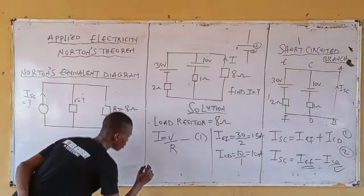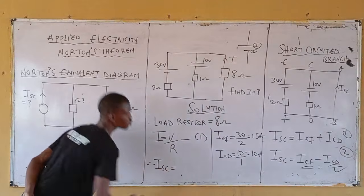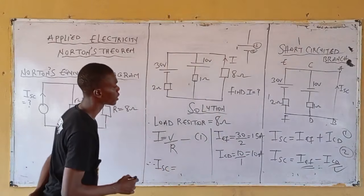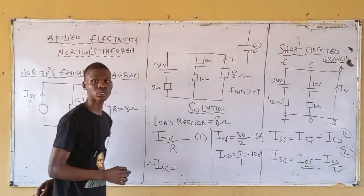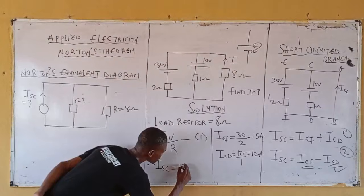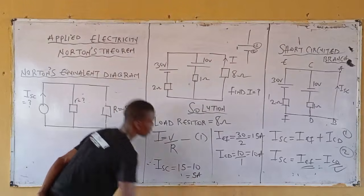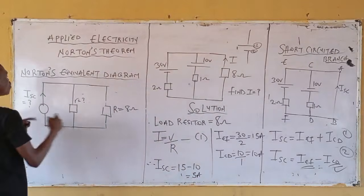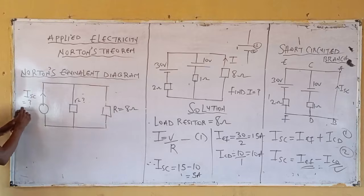Therefore, I short-circuit equals 15 minus 10, which equals 5 amperes. In place of these two unknowns, you have now gotten this value — which is 5 amperes.